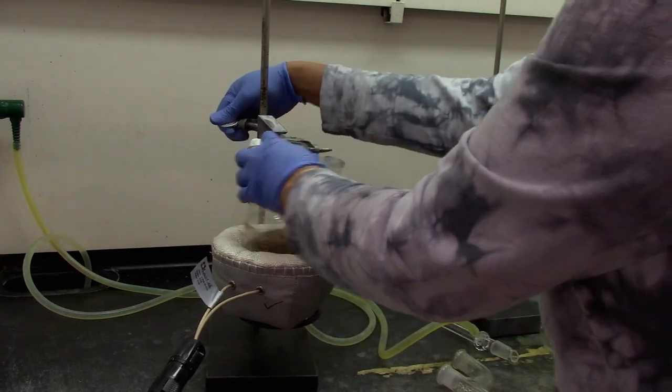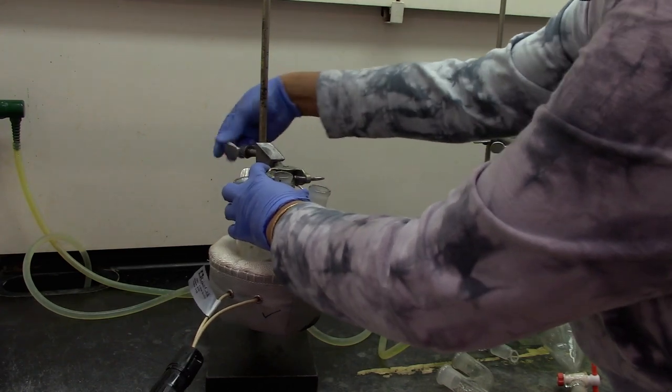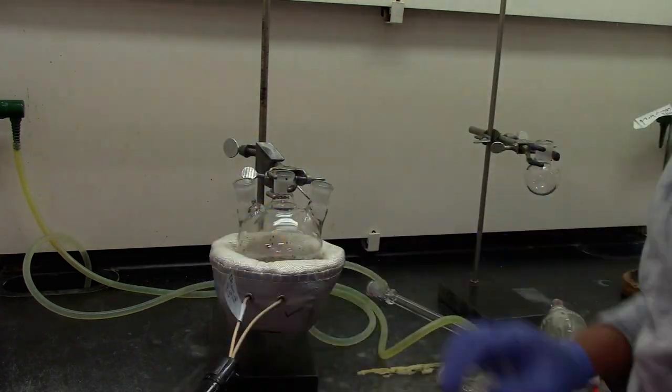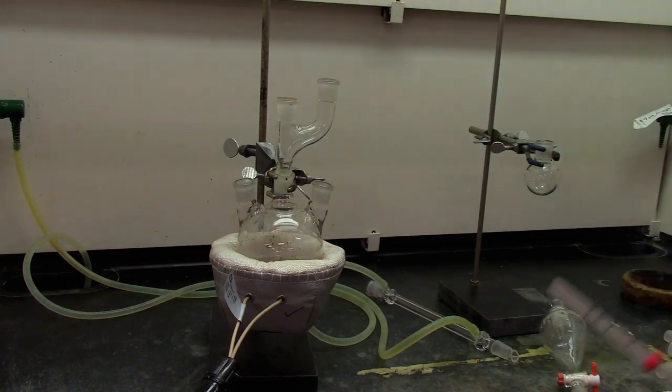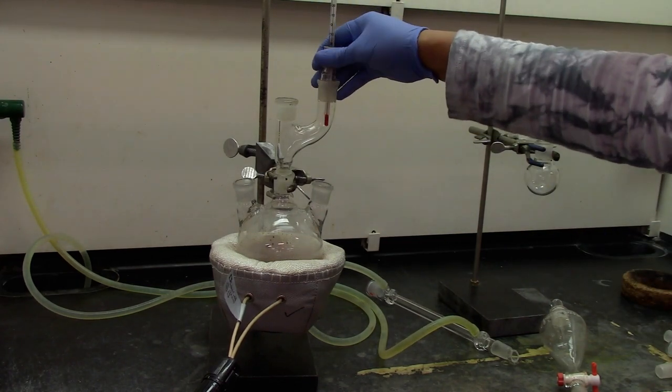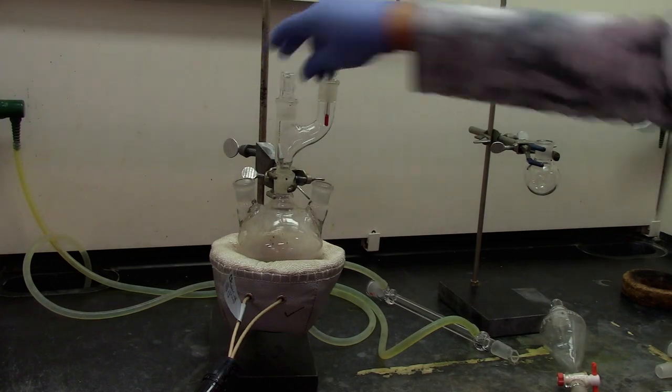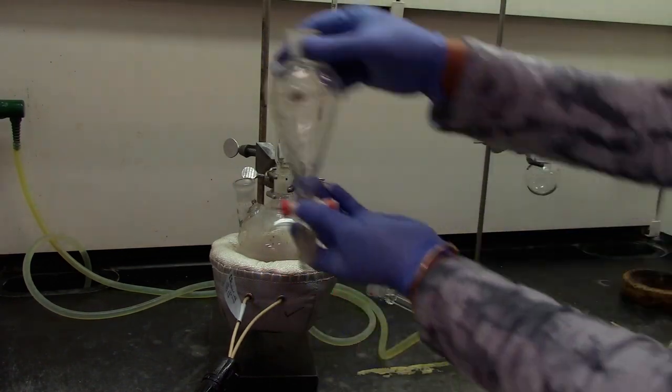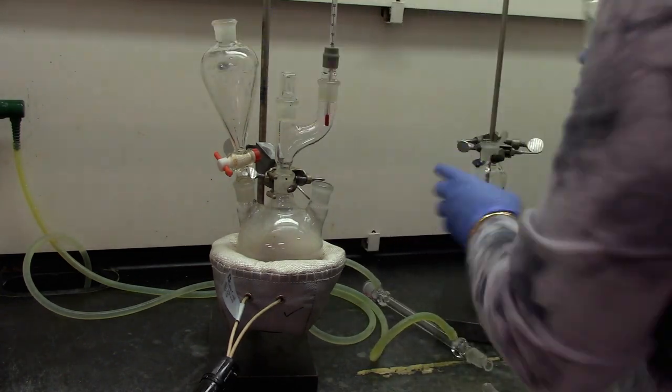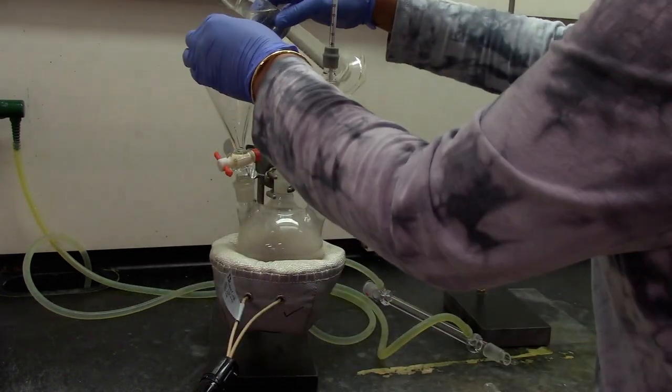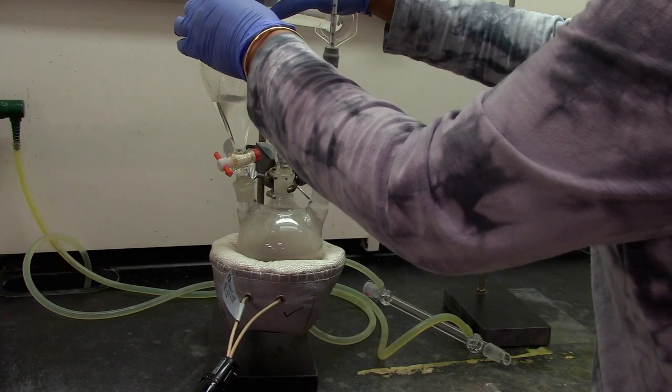Go ahead and clamp the 500ml round bottom flask and lower the round bottom flask into the mantle. Attach the separatory funnel and add 100ml of DI water.